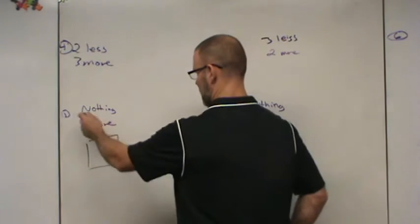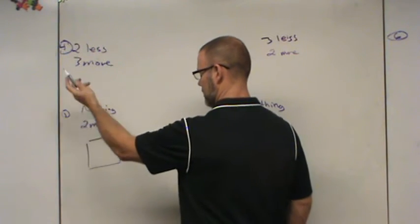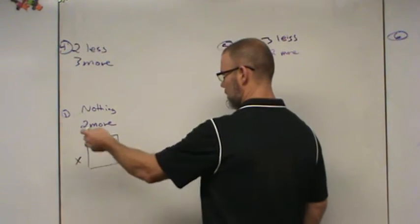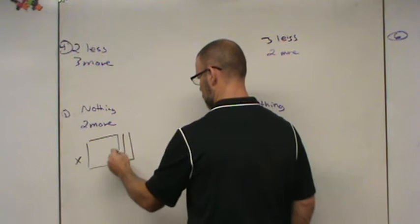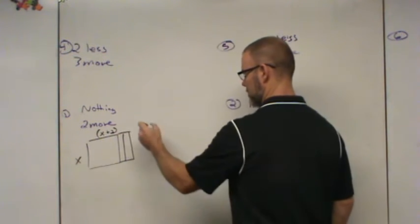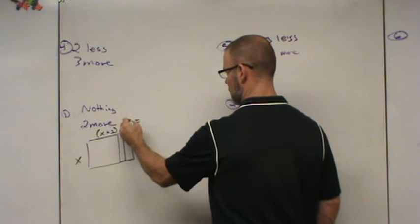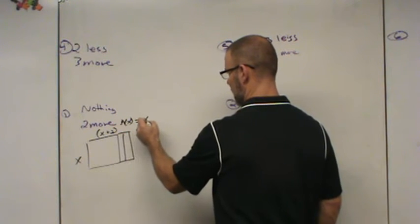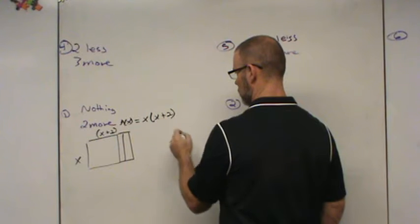So the first model, it says I'm going to do nothing to one side. It's the original side. The other side I'm going to add 2. Okay, so that's pretty basic. So x times x plus 2, represented in a couple of different ways. The area is x times x plus 2. No problem.